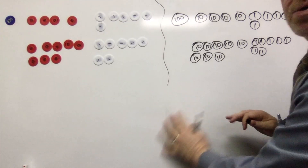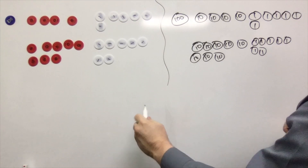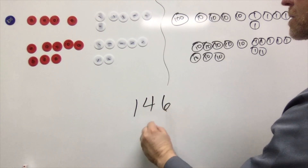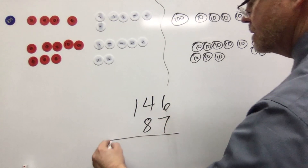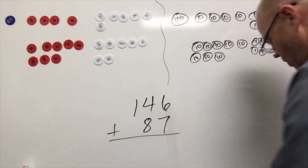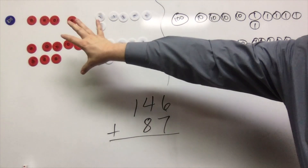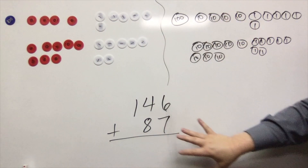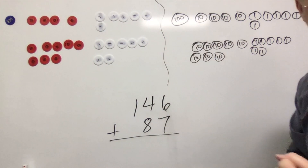And then let's record the abstract down here — so let's do 146 plus 87 right there. So we've got all three stages: we've got the concrete, we've got the pictorial, and we've got the abstract all happening side by side.